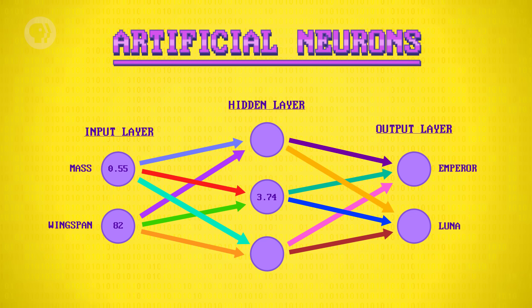So for our example neuron, given the inputs 0.55 and 82, the output would be 3.74. This is just one neuron, but this process of weighting, summing, biasing, and applying an activation function is computed for all neurons in a layer. And the values propagate forward in the network, one layer at a time. In this example, the output neuron with the highest value is our decision, lunar moth.